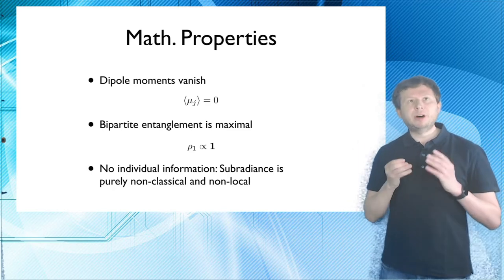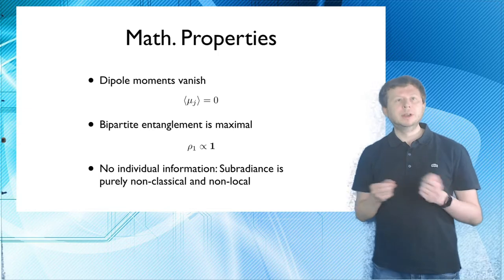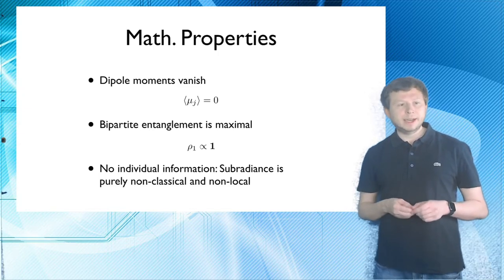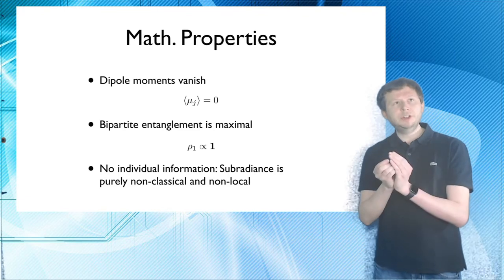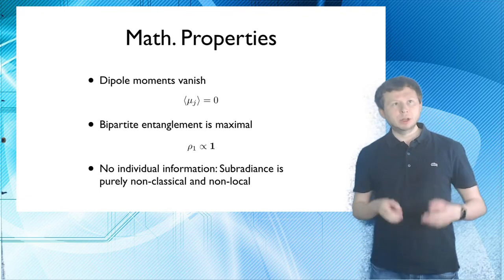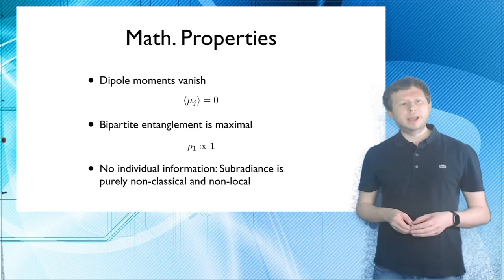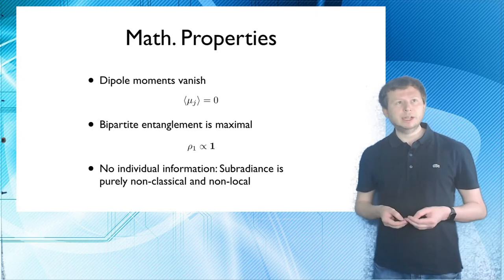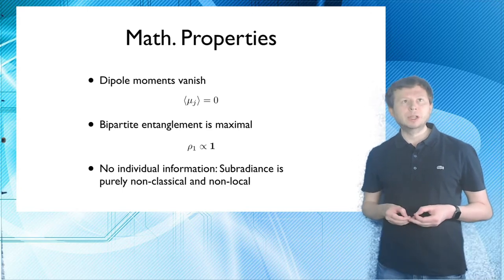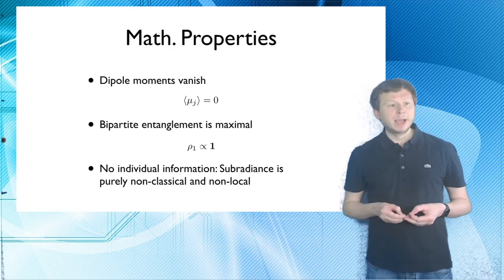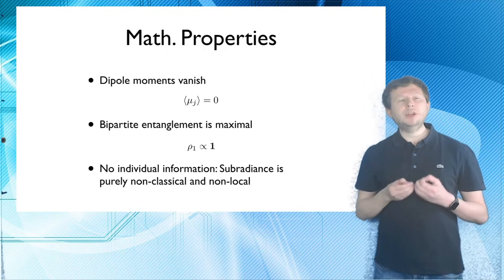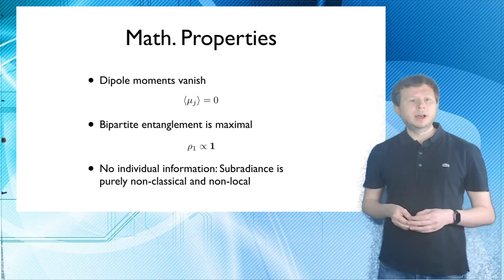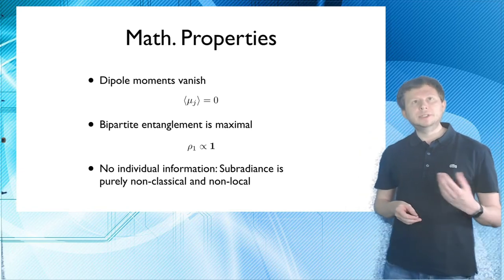Secondly, you see that the bipartite entanglement and this is sort of where the connection between subradiance and entanglement now comes about, the bipartite entanglement of one individual emitter with all the rest of the system is maximal. And this can be seen by looking at the reduced density matrix of one single atom, of one single emitter and you see that it's proportional to the identity matrix.